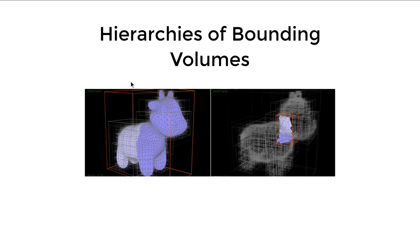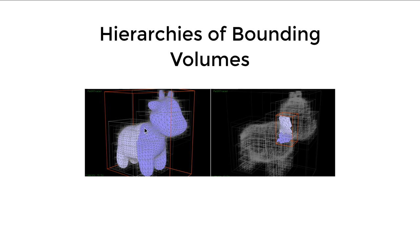This is a visualization of what's going on. Consider this cow object - it contains a lot of triangles. In a naive solution we need to iterate through all the triangles of the cow, but if we create a tree-like structure of bounding boxes of different shapes, and if a ray does not intersect with the larger red box, we don't even need to check whether it intersects with any of the triangles.